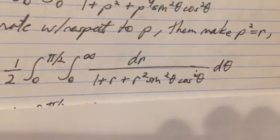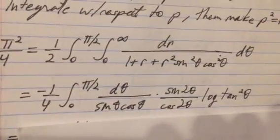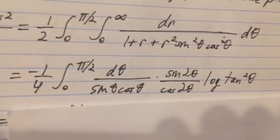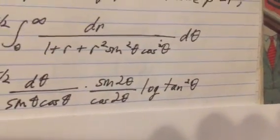So after you make rho squared equal to r, you're going to reduce the degree of the polynomial in the denominator. And we're going to flip one of the... this integral has a negative value, so you have a negative sign up front, and then you get a big bunch of trigonometric functions, and the log, that should be ln log, the log of the tangent squared.